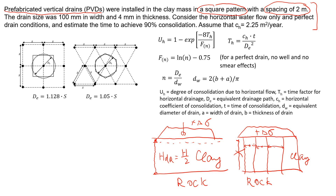We also know that the vertical drains have a size of 100 millimeters width and 4 millimeters of thickness. We're going to make some assumptions. The first assumption is that we only have horizontal flow of water — there will be some vertical flow but it will be very minor, so we neglect it. We also assume that the vertical drains are perfect drains: no smear effect when installed and no well effect, so the drains are not squeezed in the soil mass.